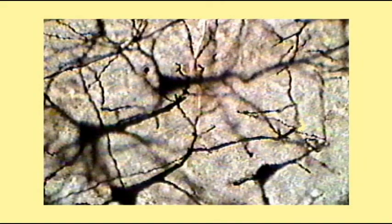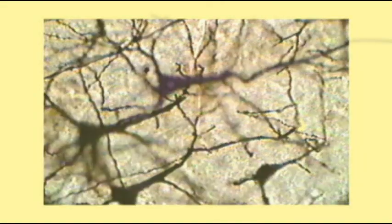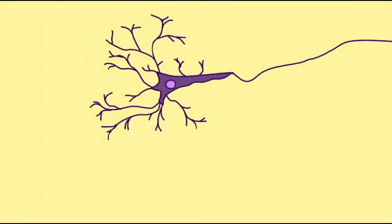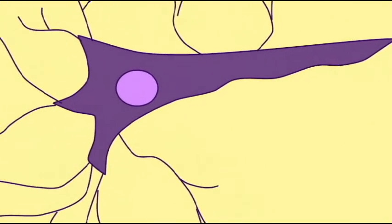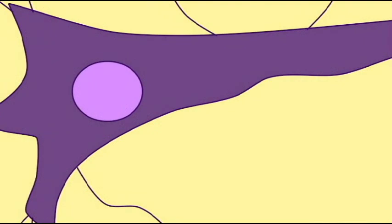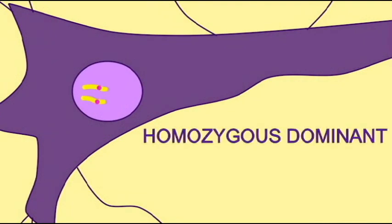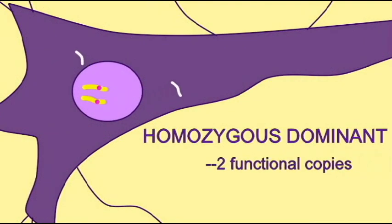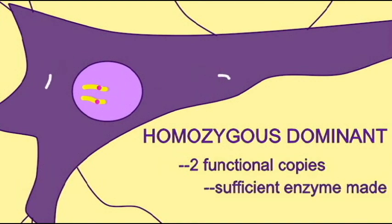For normal development, brain cells need to be able to break down a lipid byproduct known as a sphingolipid. The enzyme which does this is known as hexosaminidase A. For normal development, brain cells need to be able to make this enzyme.